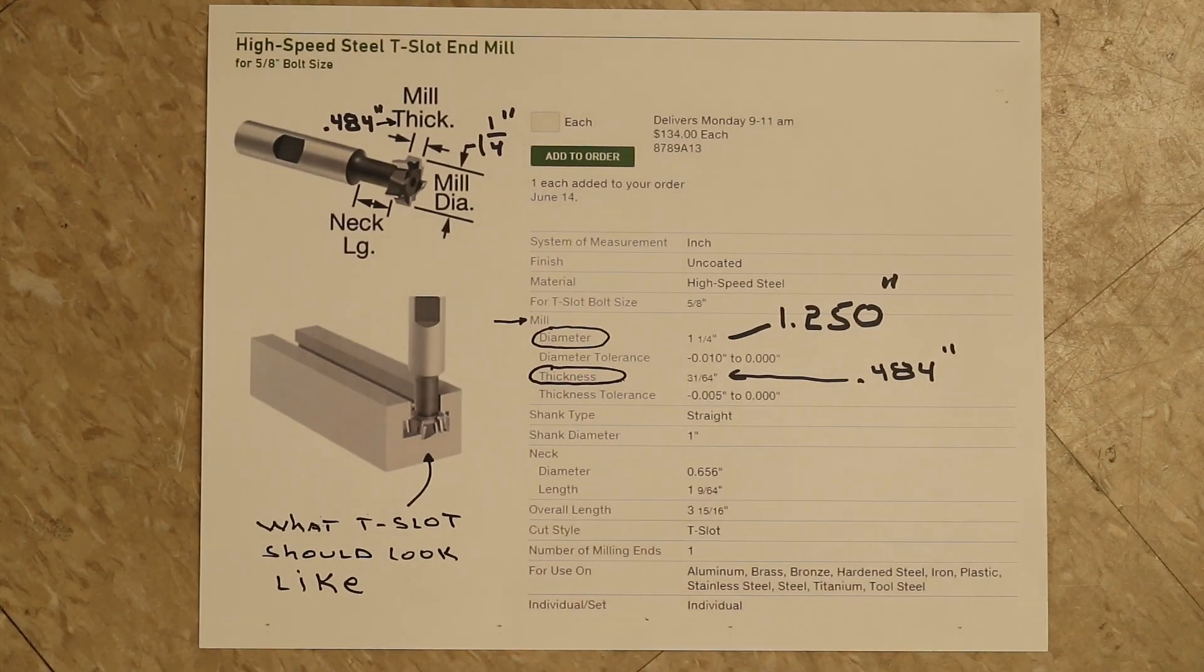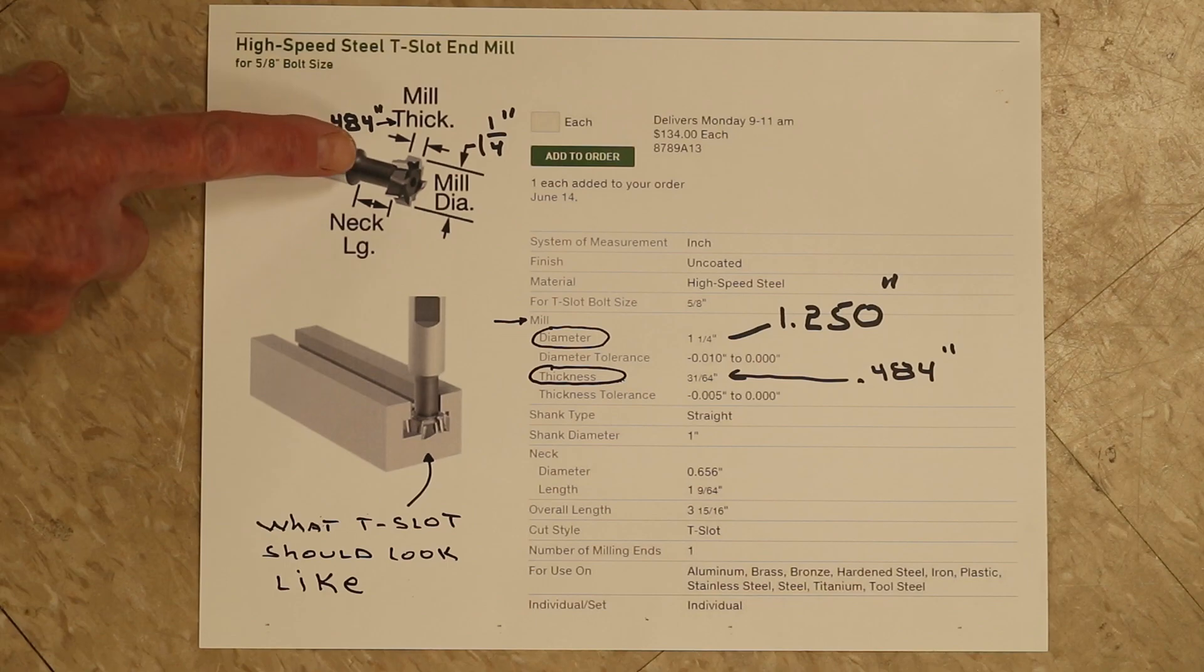To obtain the standard T-slot shape and dimensions, I've printed out a sheet from McMaster-Carr which shows a high-speed T-slot end mill. The dimensions that the end mill will produce are 1.25 inch for the cutter diameter and 0.484 for the cutter thickness.